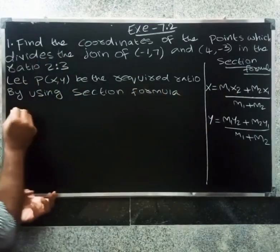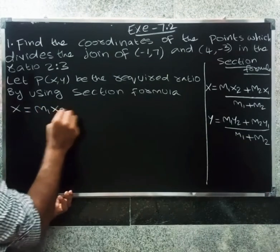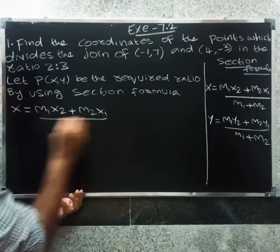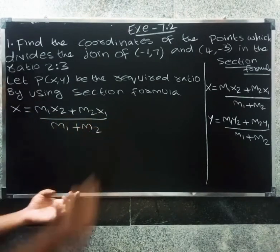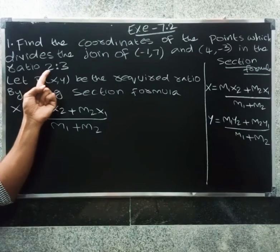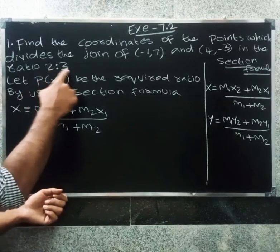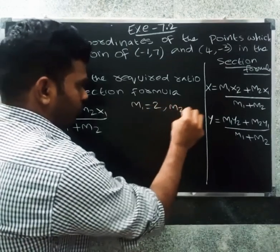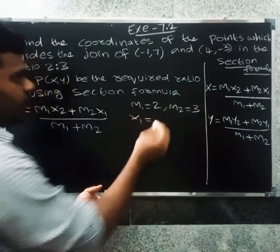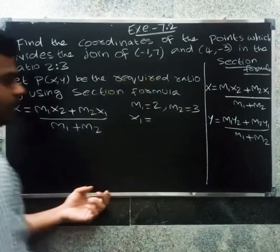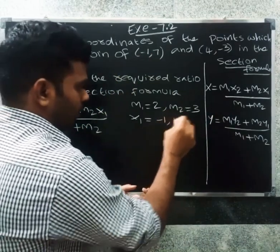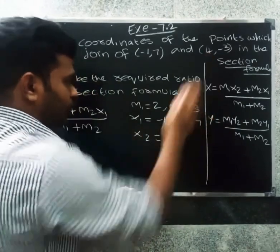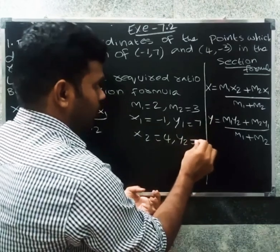x = (m1·x2 + m2·x1) / (m1 + m2). The ratio gives m1 = 2 and m2 = 3. So x1 = -1, y1 = 7, x2 = 4, y2 = -3.